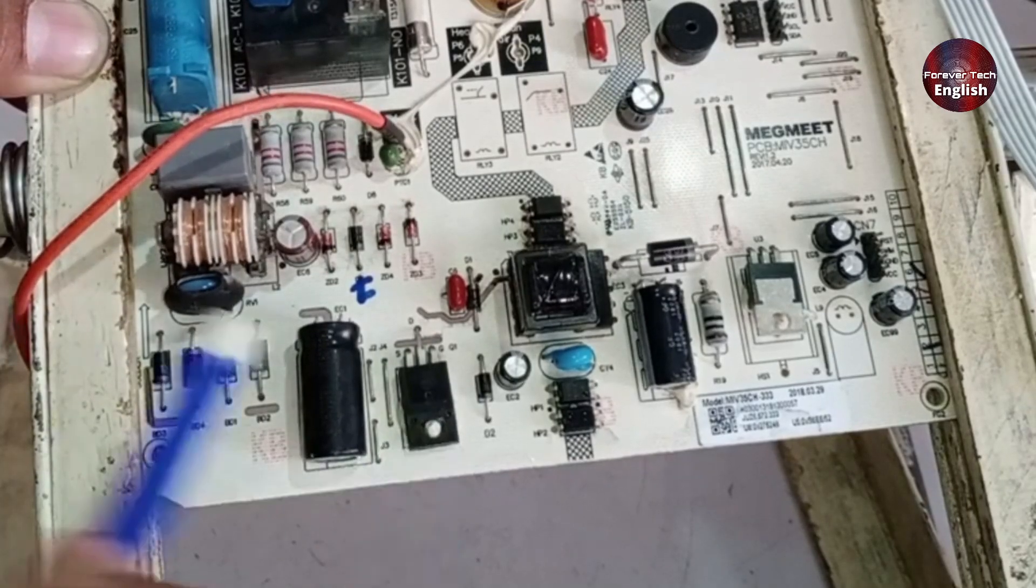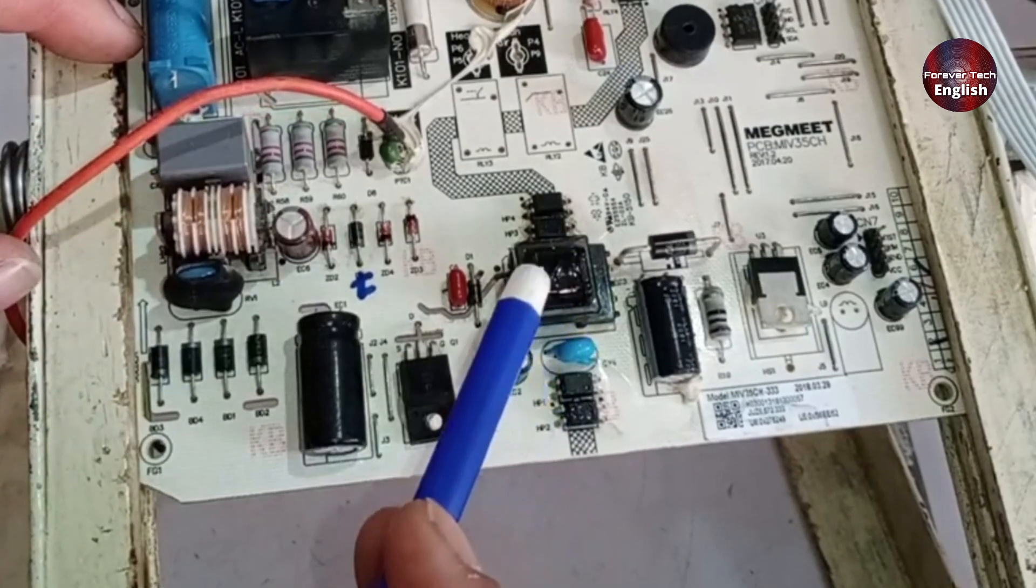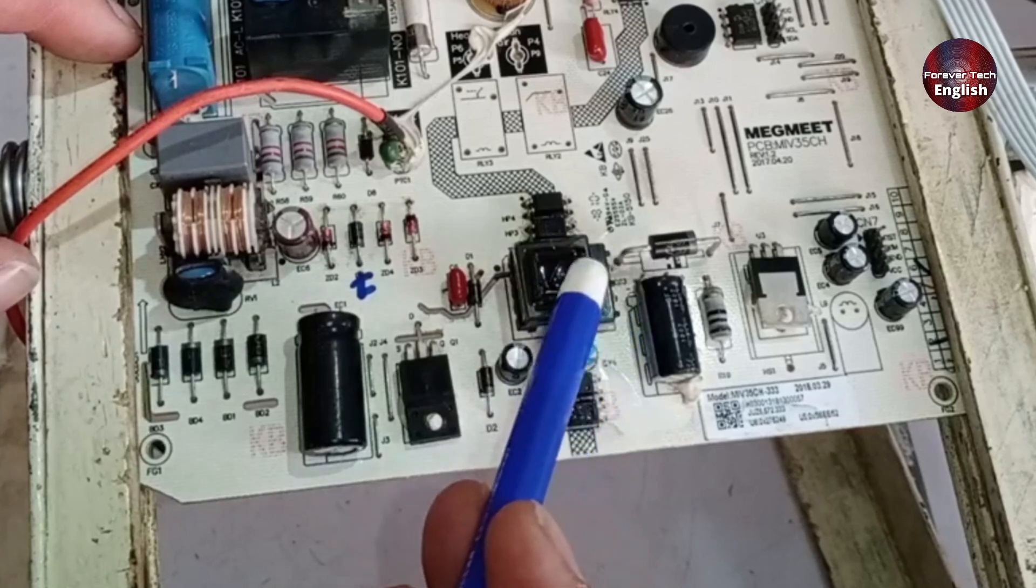The MOSFET has been installed for this purpose, and its job is to turn on the chopper. When the chopper turns on, it performs DC-to-DC conversion, generating voltage.